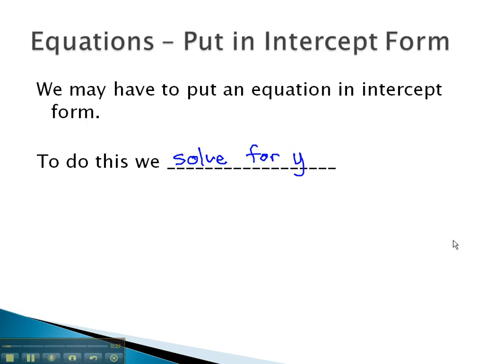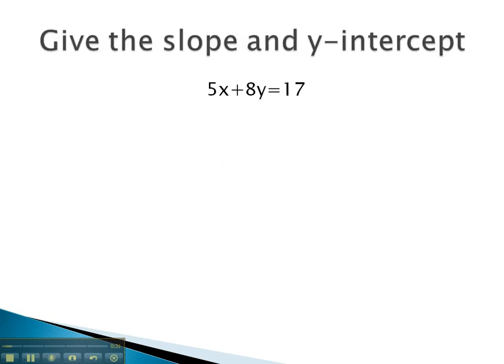So, for example, if we were to have a problem like 5x plus 8y equals 17, we would work to get the y alone by first eliminating the term without y. Subtracting 5x from both sides would get the 8y alone on the left.